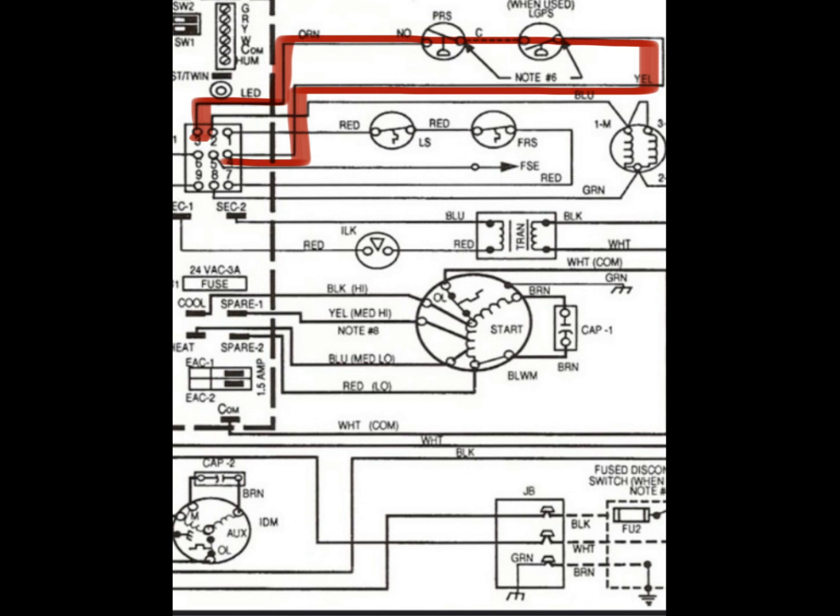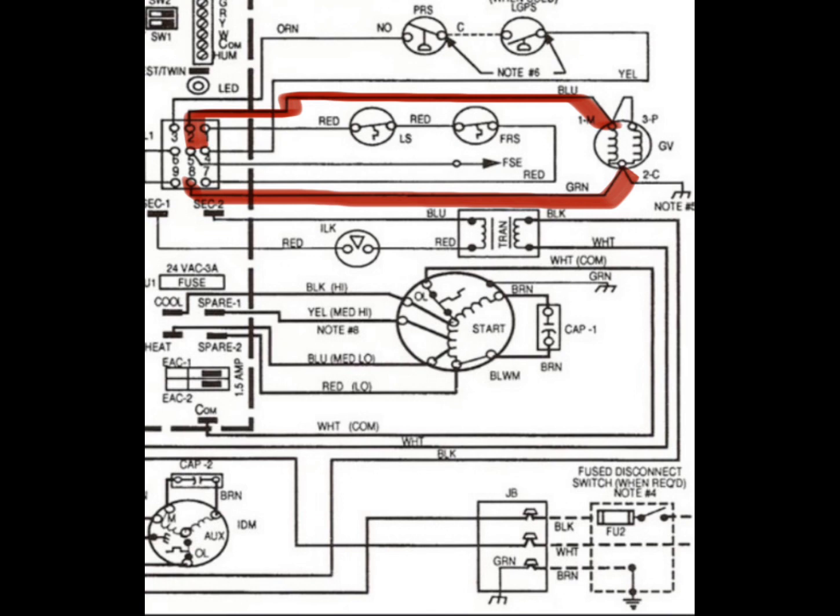So the very first thing in this furnace's sequence: thermostat calls for heat, the W pin lines up, the induced draft motor, L1, that first plug right there lights up with line voltage. Induced draft motor comes on, creates the suction. The suction is read by what we're looking at on our screen right now, which is this normally open, normally closed pressure switch. The switch closes, this passes voltage all the way back into this pin right here, which we see is a number 4.